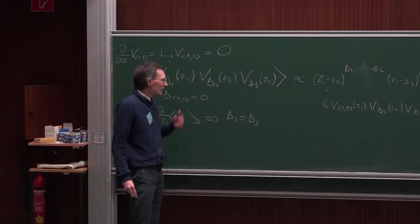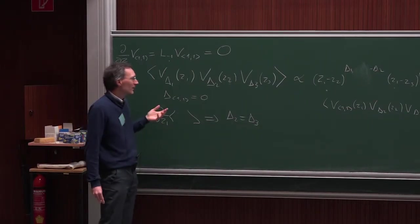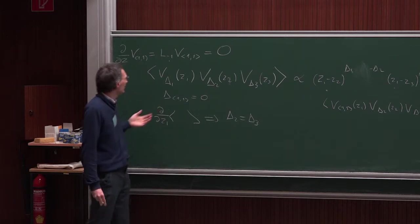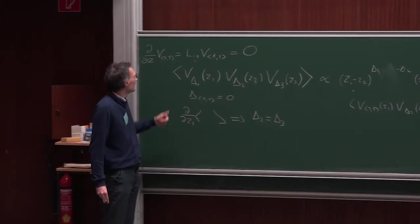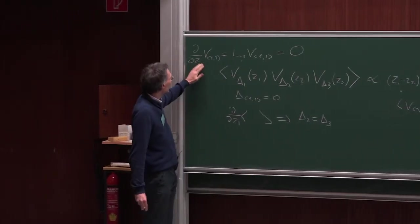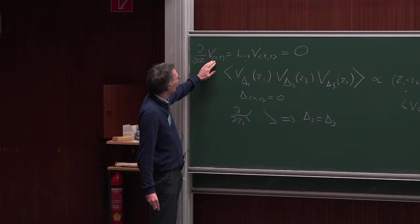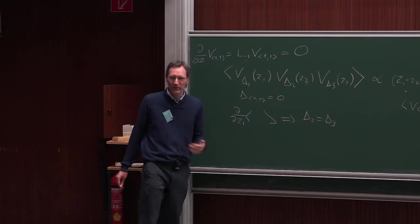This is a relatively trivial case of a null vector equation. We could call this equation d/dz · V₁₁ = 0, a null vector equation.